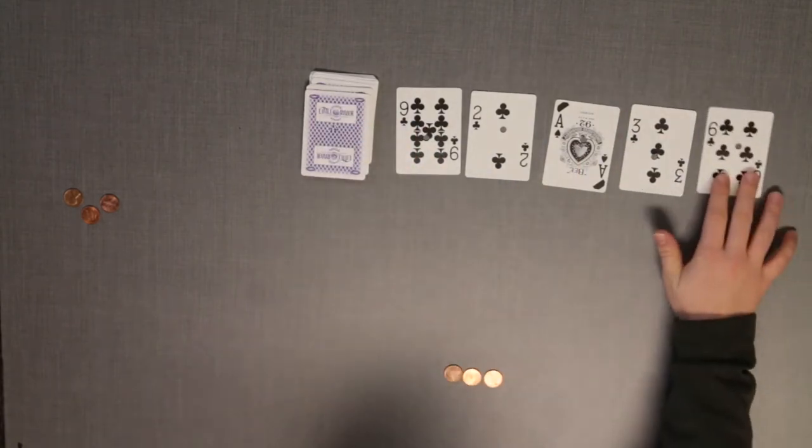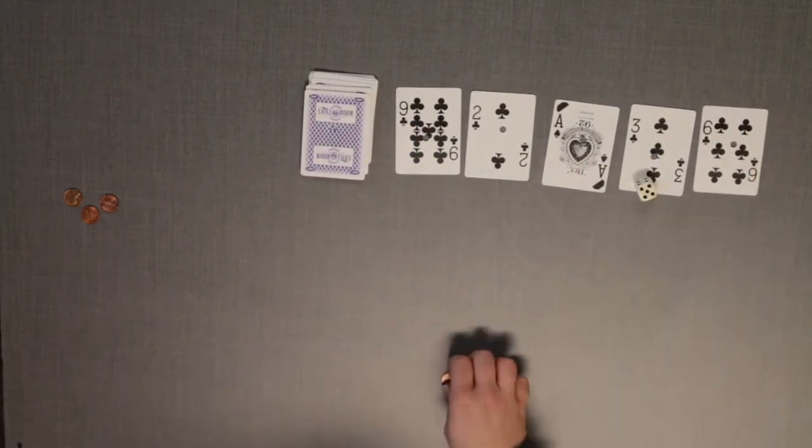Each card represents its own value and queen represents zero. This is the target number.